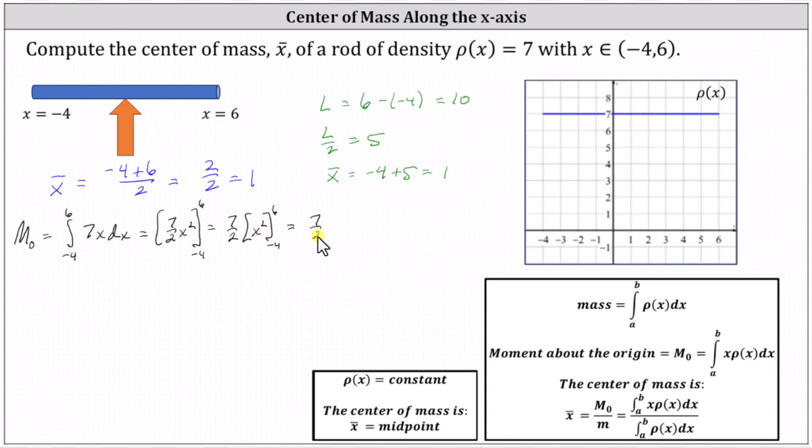Which gives us seven halves times the difference of the square of six and the square of negative four, which is equal to seven halves times the difference of 36 and 16, which is 20, which equals 70.